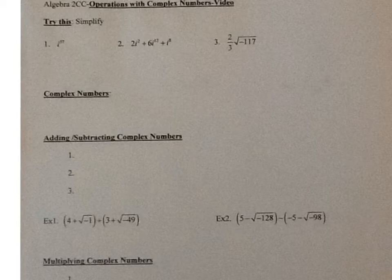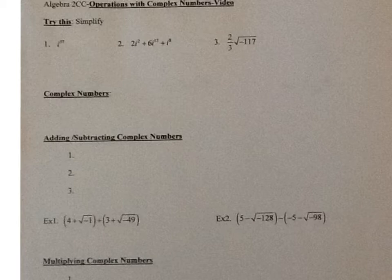Okay, so hopefully you did the try this. The first one is i to the 57. So remember, you can plug that into your calculator. You do i part — press math, go over to number, number 3 says i part — and type in i caret 57, hit equals, and you get i to the 57 is equal to i.